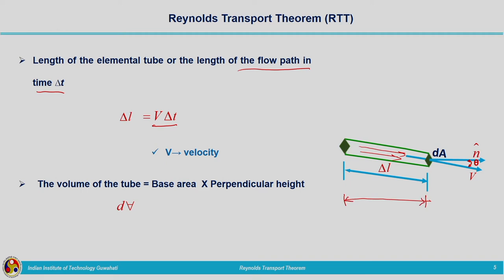The volume dV is given by base area times perpendicular height. The base area is the elemental area dA, so dV = dA · delta l · cos(theta). Delta l is the slanting length of the fluid element, and delta l·cos(theta) gives the perpendicular component in the direction of the area normal.